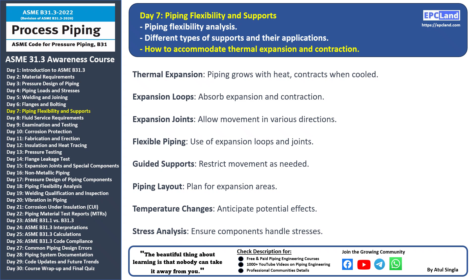Guided supports restrict movement in specific directions, helping to manage expansion and contraction in predetermined areas. Plan the piping layout to include expansion loops or joints in areas where temperature changes are expected, preventing stress and deformation. Consider the range of temperatures the system will experience and design for the potential effects of expansion. Perform stress analysis to ensure that piping components can handle the stresses caused by thermal expansion and contraction.